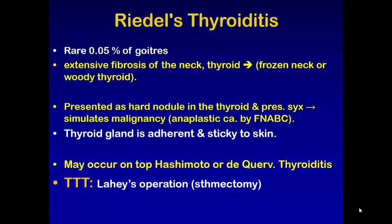These features make differential diagnosis from malignancy — usually anaplastic carcinoma — important. Fine needle aspiration and biopsy cytology is needed to differentiate it from anaplastic carcinoma. Riedel's thyroiditis may also occur on top of Hashimoto's or De Quervain's thyroiditis.